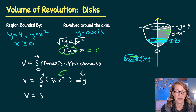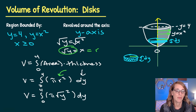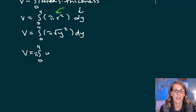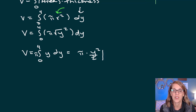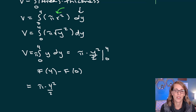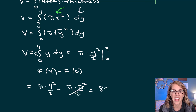I've got the integral from zero to four of pi r squared dy, where r is the square root of y, so r squared is just y. Moving pi outside, I get pi times the integral from zero to four of y dy. Integrating with the power rule gives pi times y squared over two, evaluated from zero to four. That's pi times four squared over two minus pi times zero squared over two. The second term goes away, leaving 16 pi divided by two, which is 8 pi.